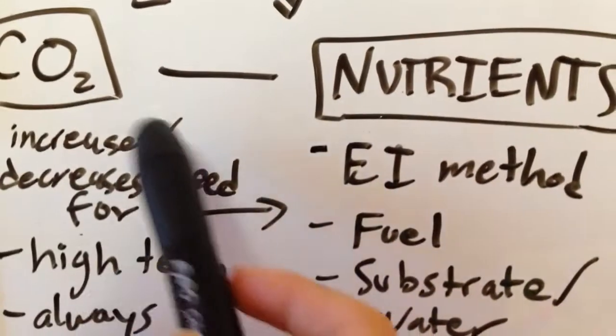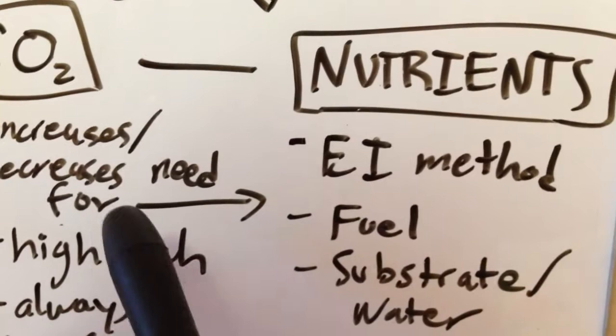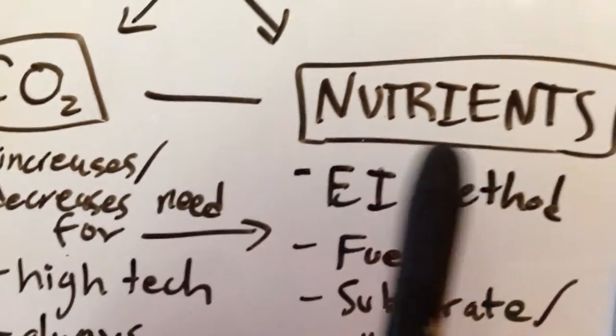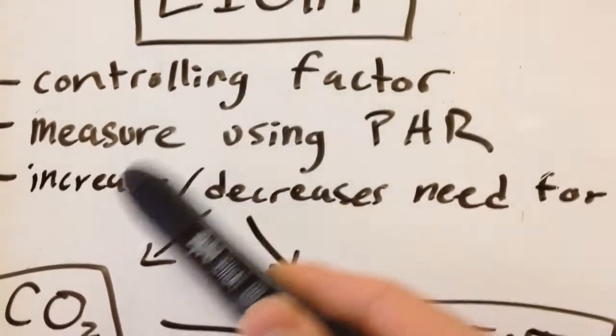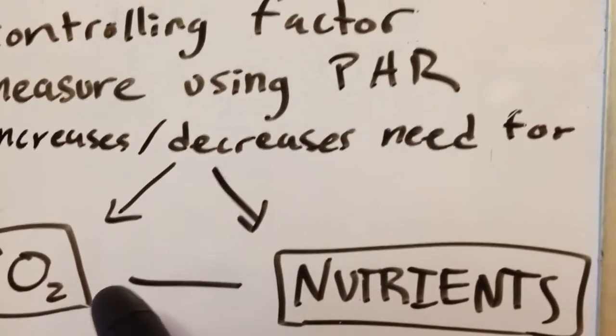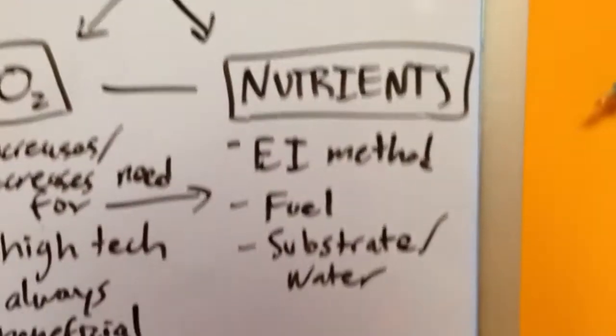The CO2 is going to determine how much nutrients the plants are going to acquire, and light is going to control these two things. So that's how all of this works together.